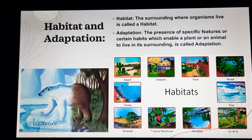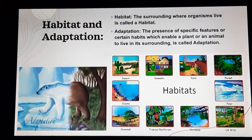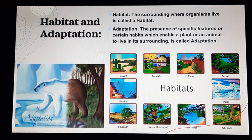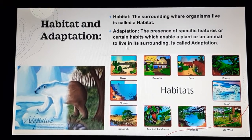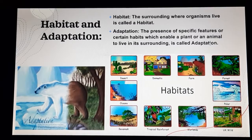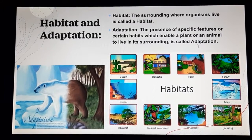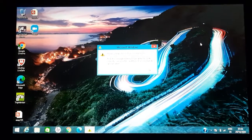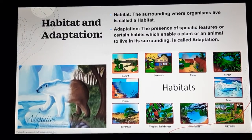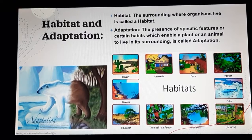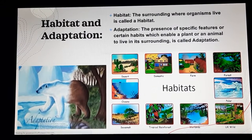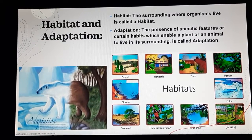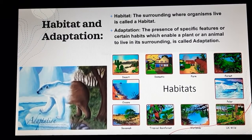The next one is adaptation. The presence of specific features or certain habits which enable a plant or an animal to live in its surroundings is called adaptation. The behavior or features that they adopt in accordance with their surroundings is known as adaptation. These adaptations enable organisms to live and survive in extreme conditions.